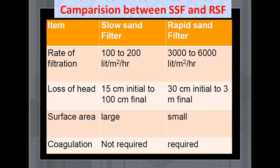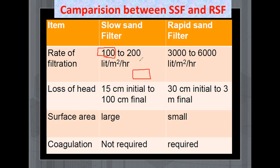The first point of comparison is the rate of filtration. In the slow sand filter the rate of filtration is 100 to 200 liters per meter square per hour. That means if we consider one meter square area of a filter media, through that area within one hour we can filter only 100 liters of water. But in the rapid sand filter the rate of filtration is very high — it is 3000 to 6000 liters per meter square per hour.